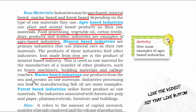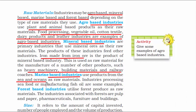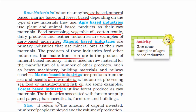Then we have marine-based industries. By the word marine, you can figure out it's related to sea and oceans — here they produce seafood or manufacture fish oil. And then we have forest-based industries, talking about resources found in forests like trees and wood. These industries are mainly focused on paper, pharmaceutical, furniture, and building material.